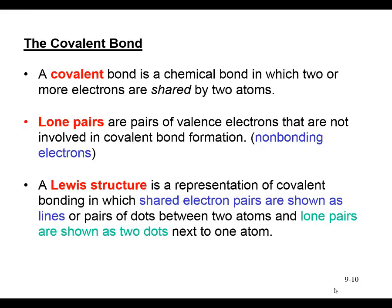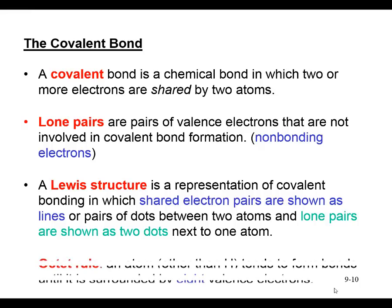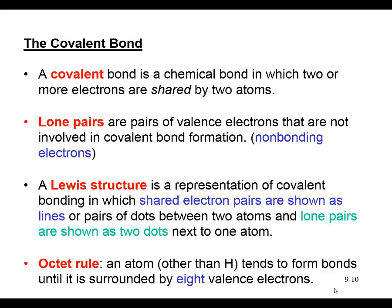As we look at the first row on the periodic table, we have hydrogen and helium. We are filling the 1s subshell, and that first shell can only hold two electrons, so it follows a duet rule. As we look at the second and third period, as soon as we gain eight electrons in the S and P subshells, we follow what we call the octet rule.